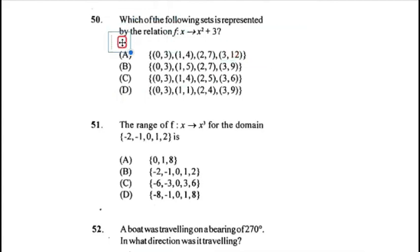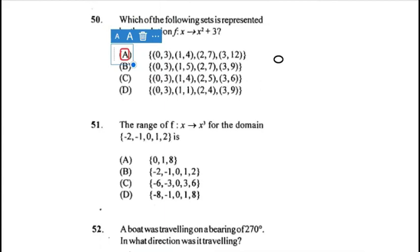Checking option B: the pair (0, 3) is correct, but (1, 5) is wrong because 1² + 3 = 4, not 5. Option D also fails — 3² + 3 = 12, but D gives a different value. This topic is explained in more detail in the 2007 paper linked in the description.